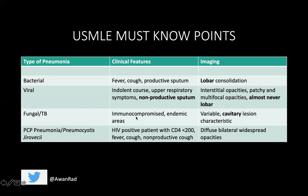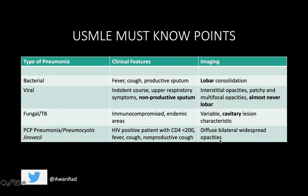Fungal and TB pneumonia typically affect immunocompromised patients — those on steroid therapy, transplant patients. Look for endemic area clues in the vignette: for Cryptococcus, look at Southern California; for Coccidioidomycosis, look at the southwest United States. That cavitary lesion is going to be very characteristic for fungal or TB pneumonia. And then PCP pneumonia — now better known as Pneumocystis jiroveci — typically presents in HIV-positive patients with CD4 count less than 200, with fever, cough, nonproductive sputum, and diffuse bilateral widespread opacities on chest X-ray.